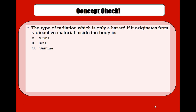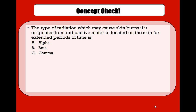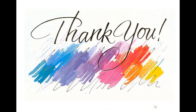Be careful how this is worded — it's saying that externally alpha doesn't cause a problem, but internally, yes. The other types cause both internal and external hazards, whereas alpha is mostly an internal hazard. The type of radiation which presents the greatest hazard from radioactive materials outside the body is gamma. The type of radiation which may cause skin burns if it originates from radioactive material located on the skin for an extended period of time is beta.